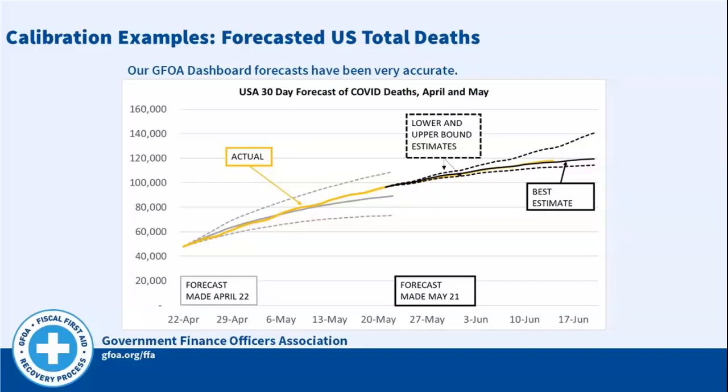I've been at the forefront of COVID projections since the beginning of the year. What you're looking at here is my prediction of accumulated deaths in the U.S. attributed to COVID. The dotted lines are 90% confidence intervals — we were 90% confident the actual would fall between the dotted gray lines in April and the dotted black lines in May when we made those forecasts. The actual yellow line is well within the range and pretty close to my best estimate. These predictions are on the GFOA dashboard, and a new 30-day update will be coming next week.